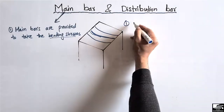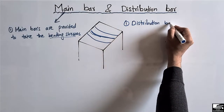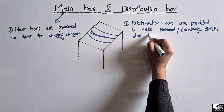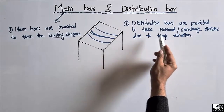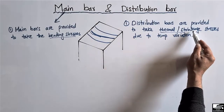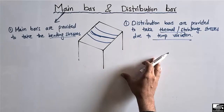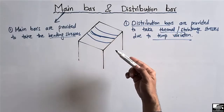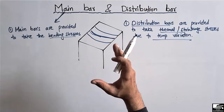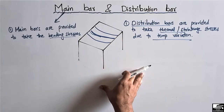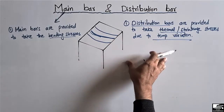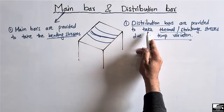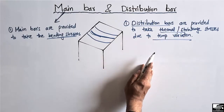While the distribution bars are responsible to take the shrinkage or the thermal stresses due to the temperature variation. The distribution bars are provided to take thermal or shrinkage stresses due to temperature variation in the slab. So the main bars are responsible to take the main bending stresses, while the distribution bars are responsible to take the shrinkage or the thermal stresses.